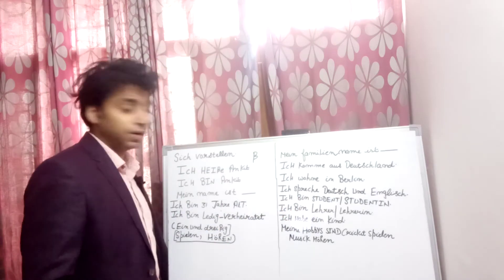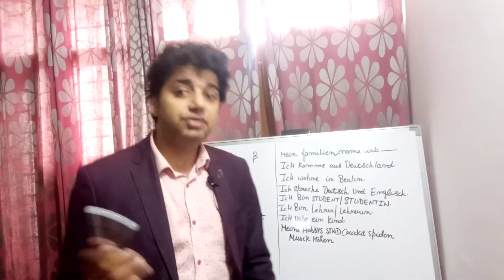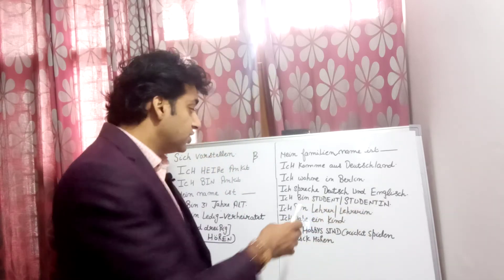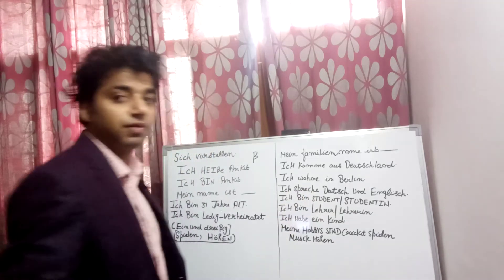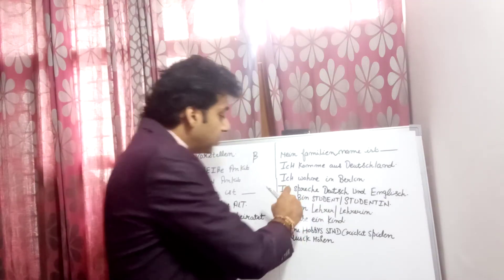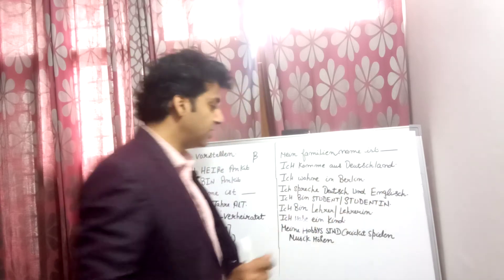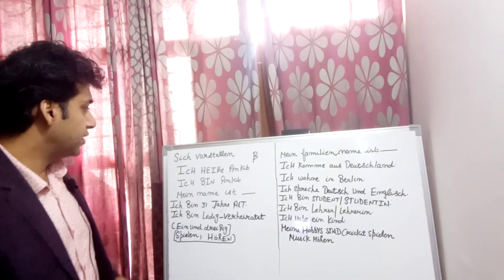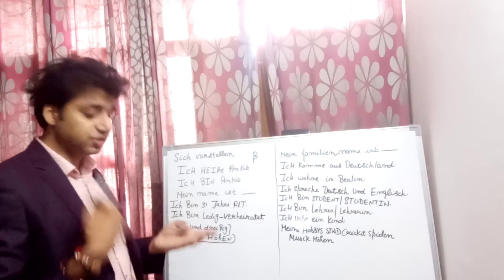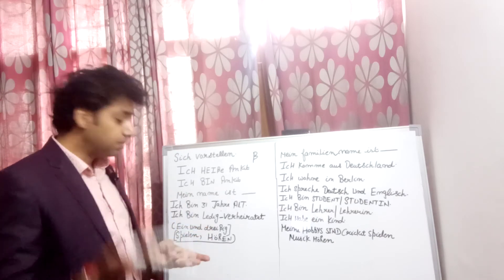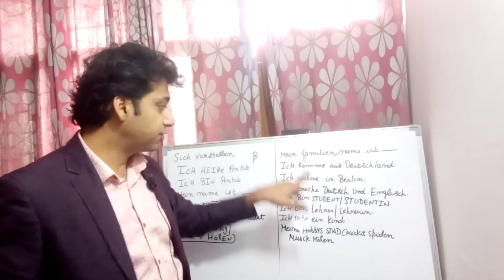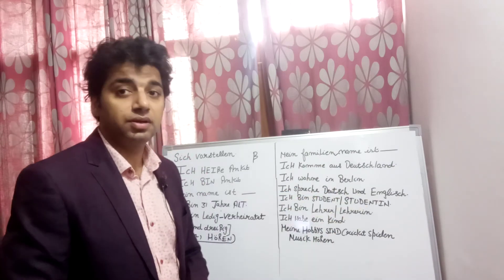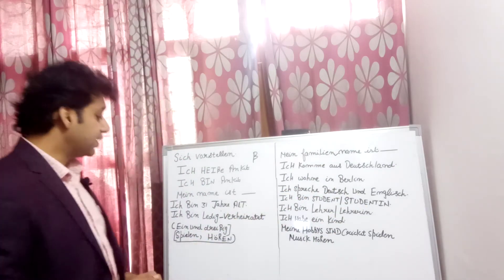If I say 'I speak German and English,' the phrase is 'Ich spreche Deutsch und Englisch.' The verb 'sprechen' means 'to speak,' and 'spreche' is the conjugated form. So we have: 'Ich heiße Ankit,' 'Ich bin Ankit,' 'Mein Name ist Ankit,' 'Mein Familienname,' 'Ich komme aus Deutschland,' 'Ich wohne in Berlin,' 'Ich spreche Deutsch und Englisch.'